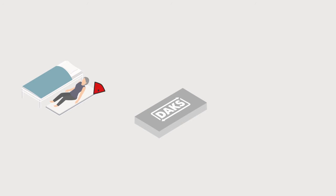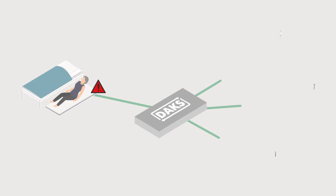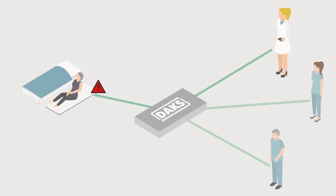If, for example, a fall mat triggers an alarm, all predefined helpers can be informed or called simultaneously. The call is active for as long as it takes for one of the helpers to react to the alarm.